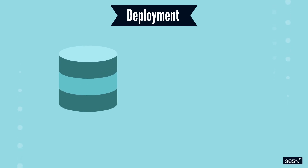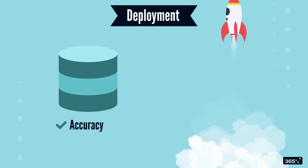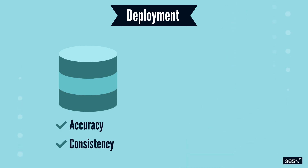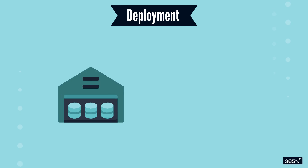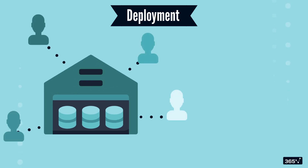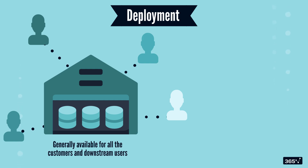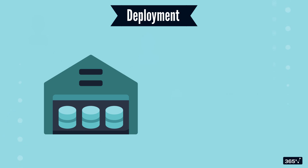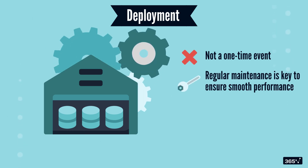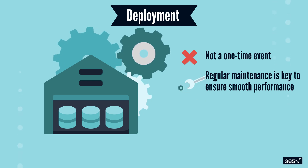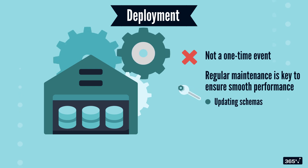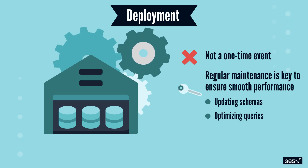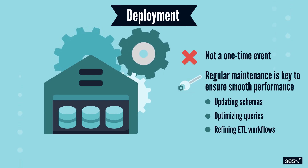Finally, the big moment: deployment. Once data has been validated for accuracy and consistency, the warehouse is ready to be deployed. Deploying or launching is the process in which the data warehouse becomes generally available for all customers and downstream users to view and run queries or analytics on. But launching a data warehouse isn't a one-time event. Regular maintenance is key to ensure smooth performance. This includes updating schemas, optimizing queries, and refining ETL workflows as business needs evolve.